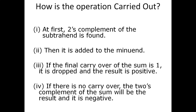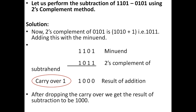If there is no carry over, the two's complement of the sum will be the result and it is negative. Now let us perform the subtraction of 1101 and 0101. We all know 1101 in decimal means 13 and 0101 in decimal means 5. In our case, 1101 is the minuend and 0101 is the subtrahend.